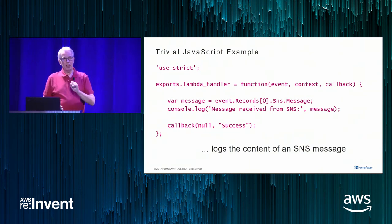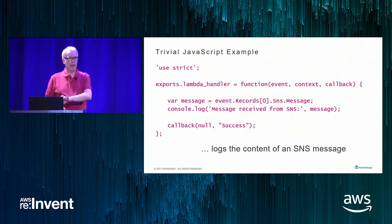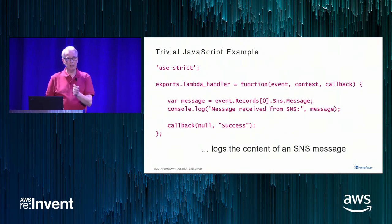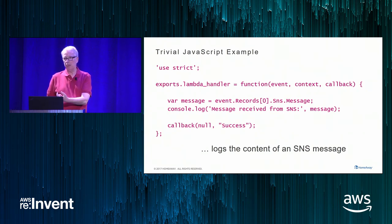Think about what your use case is. If you're going to run one of these once an hour, then this is a great use of Lambda. If you're running one of these 100 times a second, this is a very bad use of a Lambda — it runs in two milliseconds but you get charged for 100 milliseconds.